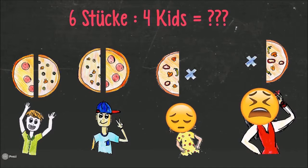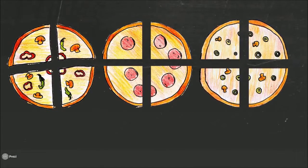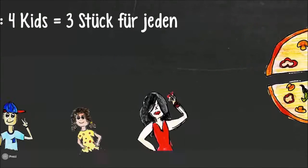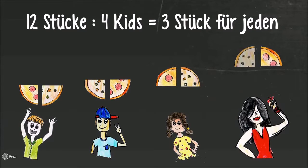If we split each pizza into four slices, the situation changes entirely. Since we have three pizzas, there are three times four slices of pizza, equaling twelve. Twelve divided by four equals three, which means everyone can have three slices of pizza.